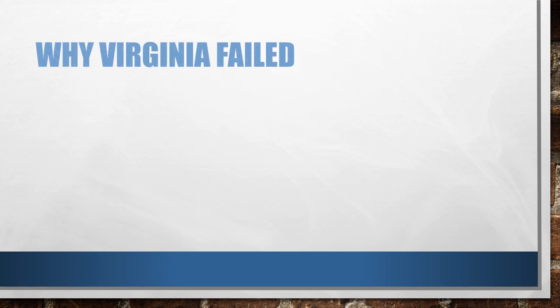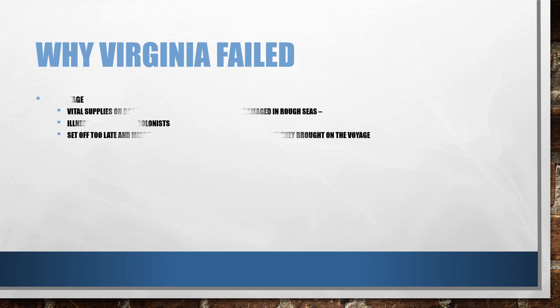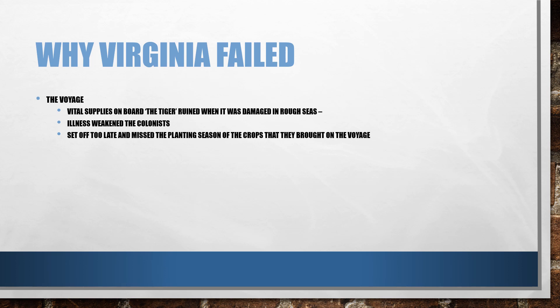This question on why the colonization of Virginia failed could be a 12- or 16-mark question. Starting with the voyage itself: the Tiger was damaged in rough seas and a significant amount of its supplies were lost. Illness also weakened the colonists, meaning they couldn't get straight to work upon arriving in Virginia. Going back to the planning stage, the timing of setting off was too late, so the crops brought on the voyage didn't have enough time to grow and be harvested to help the colonists survive through the winter.